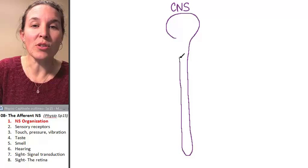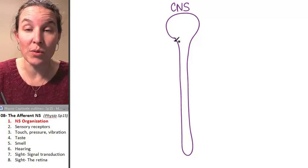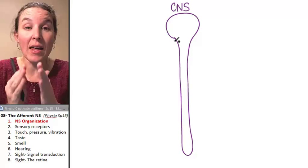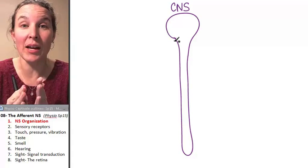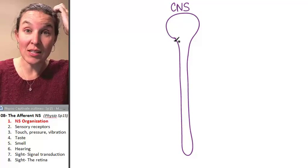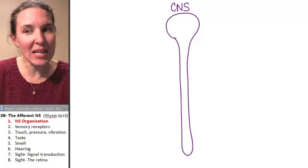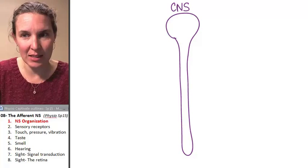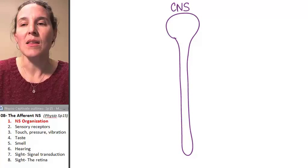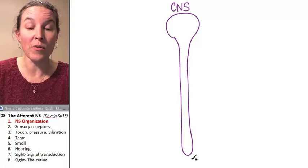And the central nervous system only includes neurons that stay inside the brain or the spinal cord. If neurons come out, even if a piece of them is in the central nervous system, then they're going to be part of the peripheral nervous system.